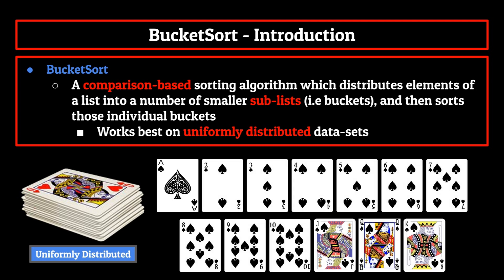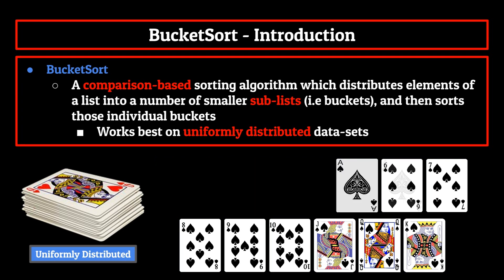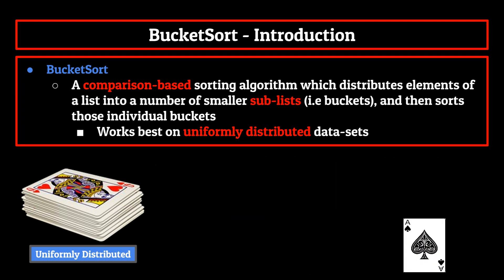So you might decide to make separate piles for the ones, twos, threes, and so on. Then you'd begin distributing the cards into those different piles or buckets. A seven goes in the sevens pile, a queen in the queens pile, a two in the twos pile, you get the idea.